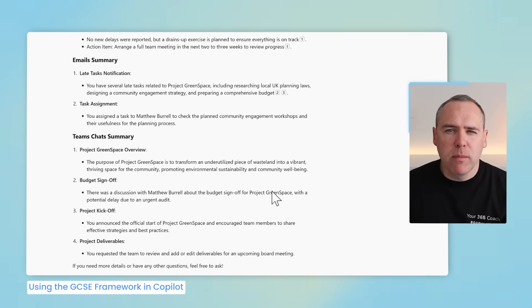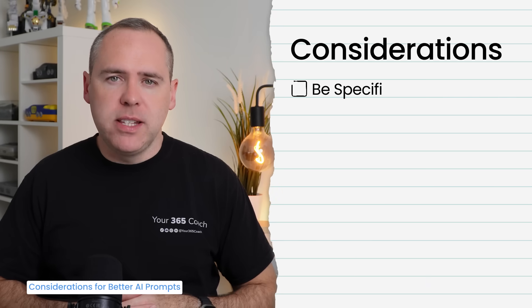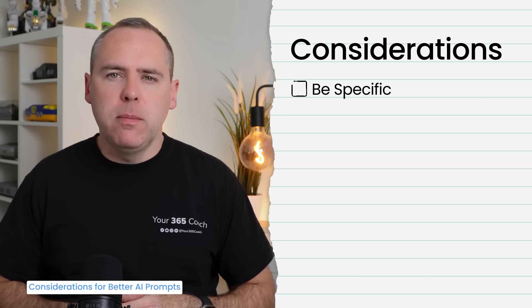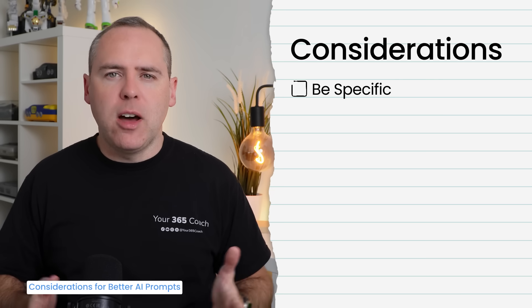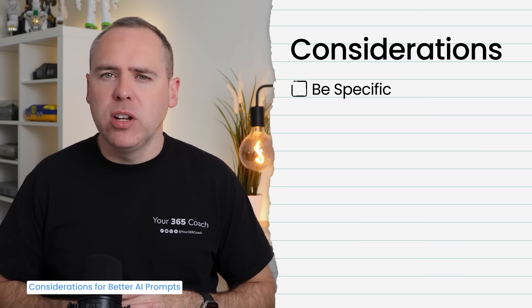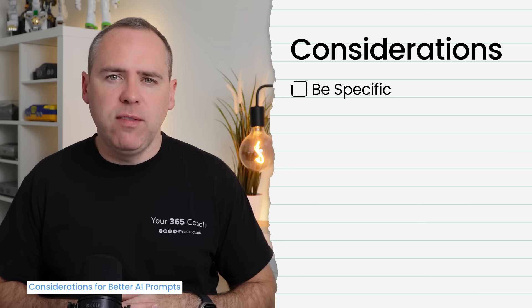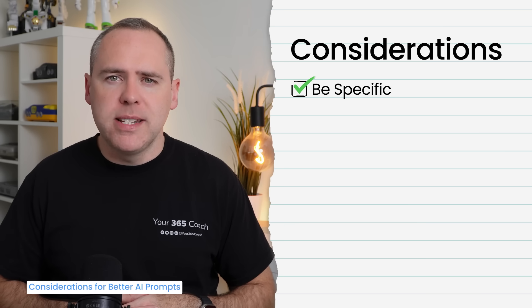So immediately in one single prompt, we've got a much better result with more information in a structure we can better understand using the GCSE framework. Now that you can use GCSE to improve your prompts, what else should we consider when working with Copilot or AI tools? First, be very specific. If you're vague in your prompts, Copilot or AI will often insert information to help that may not actually be true, or even worse, it may hallucinate and come up with information you never shared but it believes to be correct. So always be specific with your prompts to ensure the best outcomes.